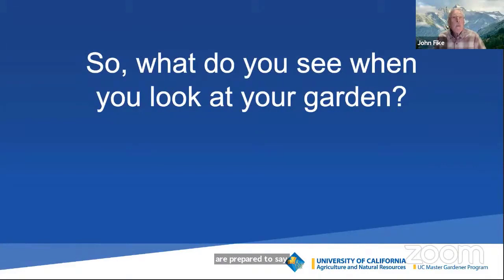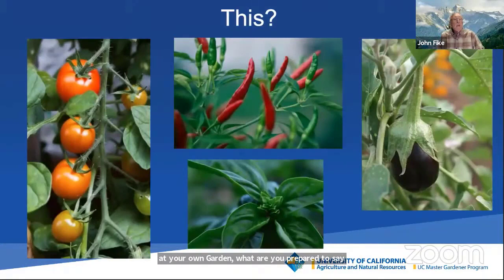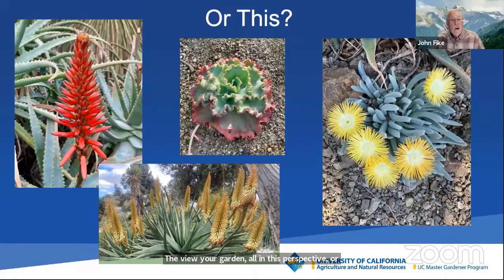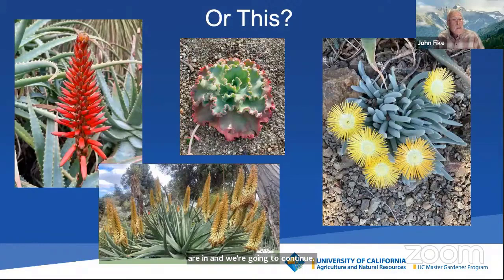Do you see this? Maybe you view your garden as a horn of plenty, where you can get lots of wonderful tomatoes and peppers and basil and eggplant for your table, for your neighbor's table, for the food bank. Or maybe you are quite aware of the drought that we were in - and are in, and are going to continue in - so you have put in drought-resistant plants, whether natives or succulents like aloes or echeverias, but you still want some beauty.